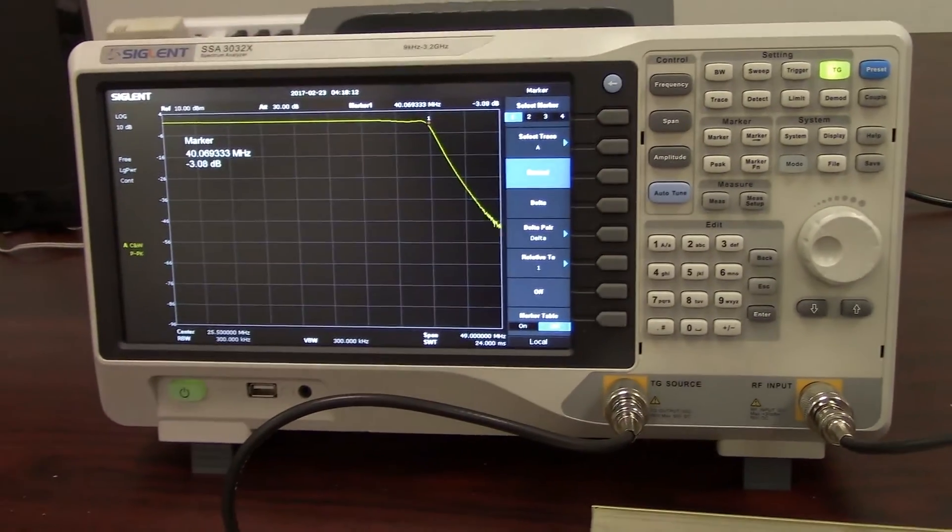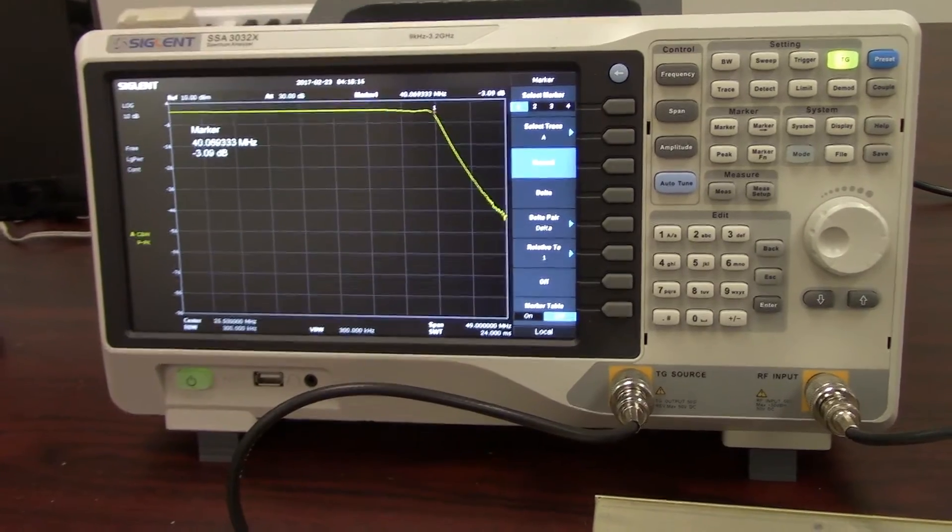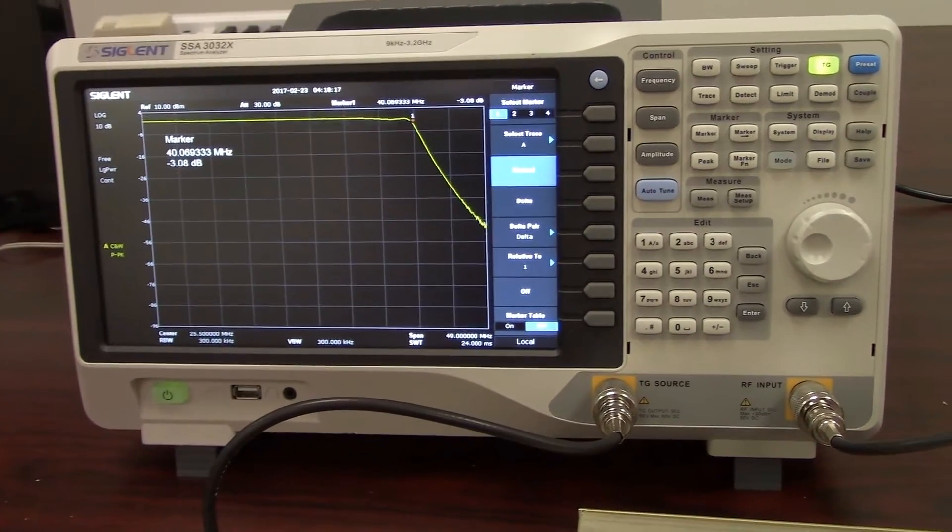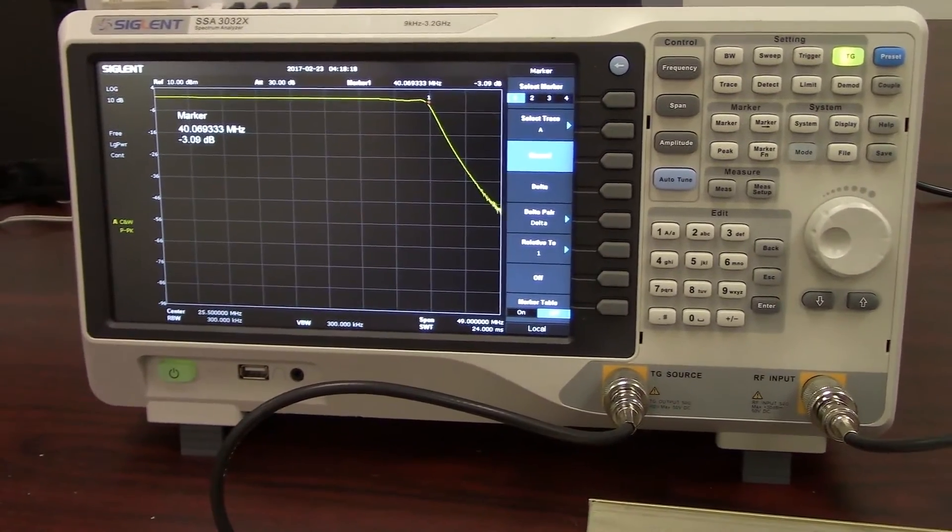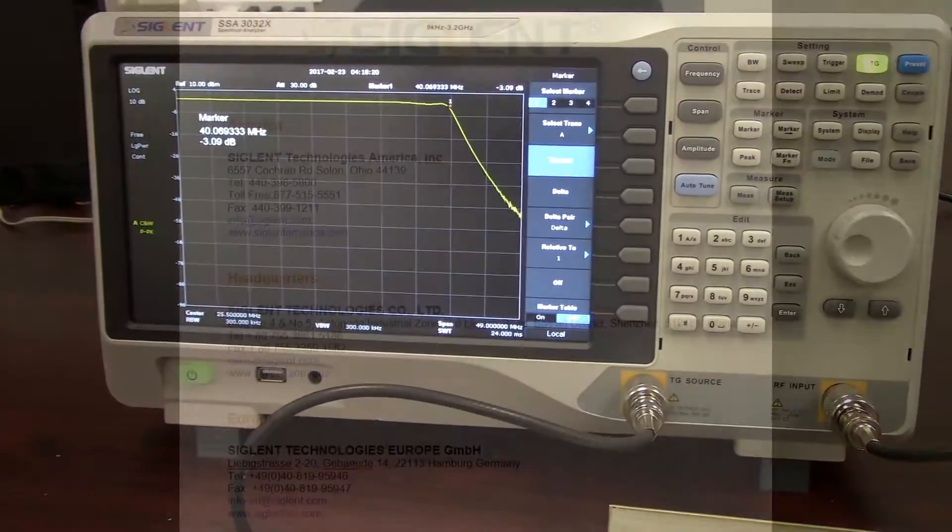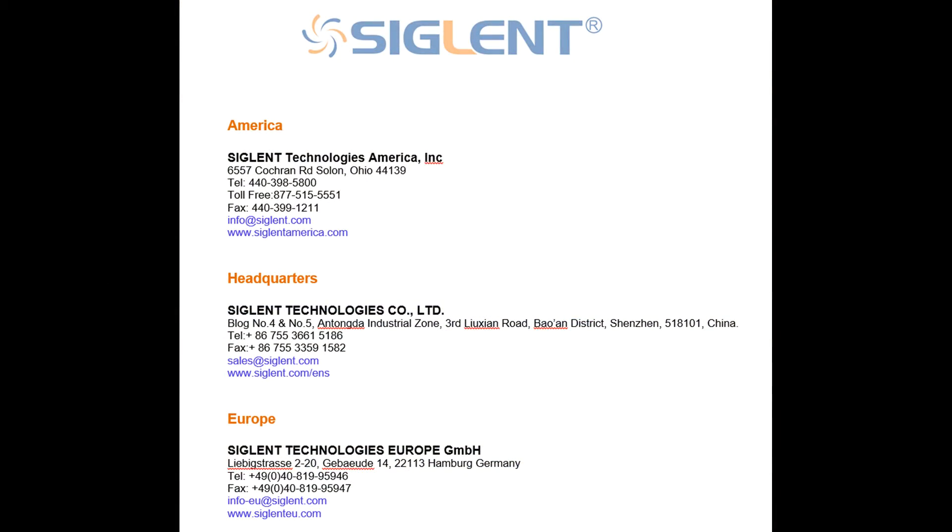But again, if you wanted to get a higher degree of accuracy, as well as more sensitivity, a spectrum analyzer with a tracking generator will be the way to go. Well, thank you again for watching this video. If you have any questions, please contact your Siglent office. Thanks again, and have a great day.